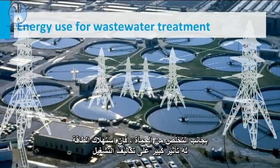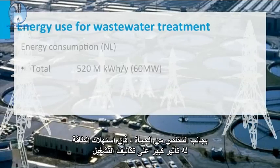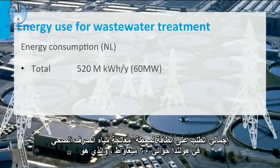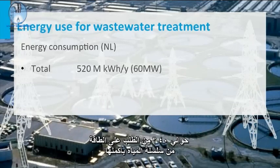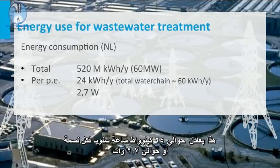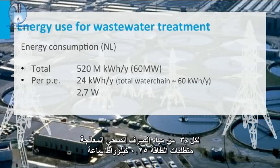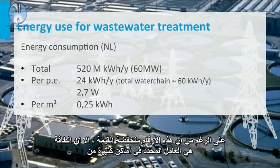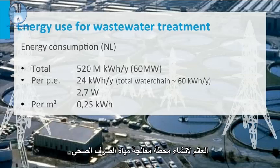Next to sludge disposal, energy consumption has a large impact on operational costs. The total power demand for sewage treatment in the Netherlands is about 60 MW, which is about 40% of the power demand of the entire water chain. Per population equivalent, this is about 24 kWh per year, or about 2.7 W. Per cubic meter of treated sewage, the energy requirement is 0.25 kWh. Although these numbers are low in value, energy is a limiting factor in many places of the world to install sewage treatment.